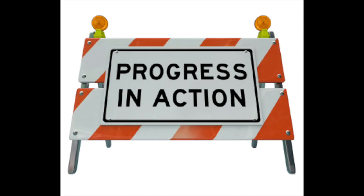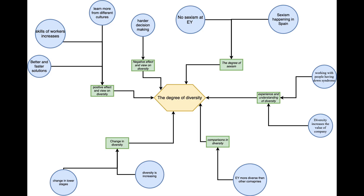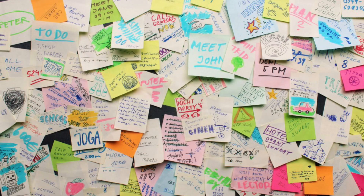After some modifications we came up with a second graphic scheme which is more organized. In this scheme, the open coding is blue, the actual coding is green, and the main concept is yellow. The arrows show the relationship between the categories as before.